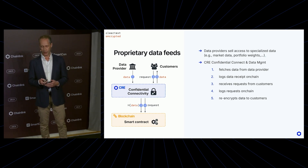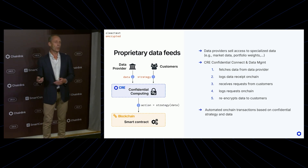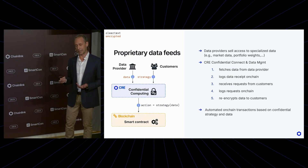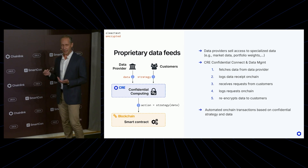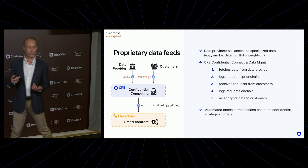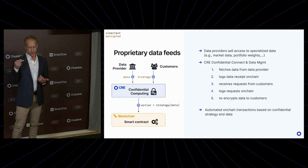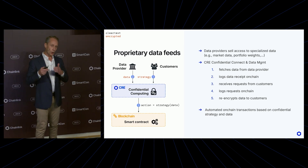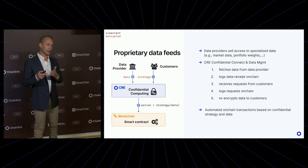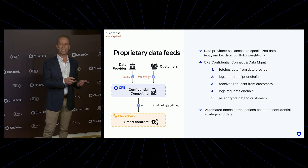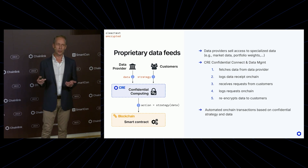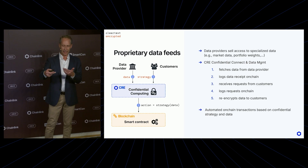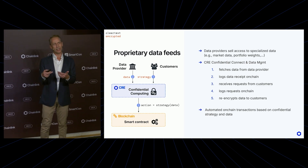Now this is all possible. It gets even more exciting when we actually let those customers perform computation on that data. Something you could do is let customers submit an encrypted strategy — a hidden strategy on what kind of token trades they want to perform based on that secret data as soon as it comes available.